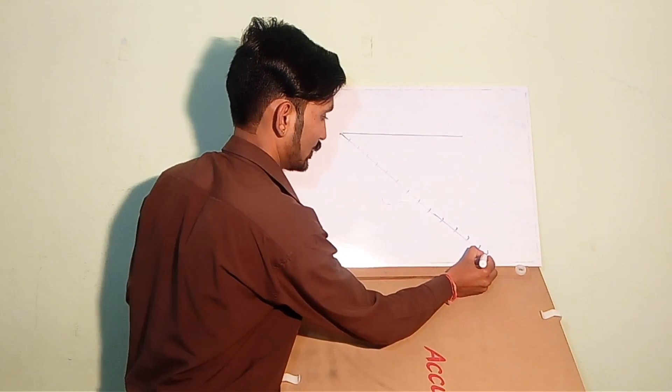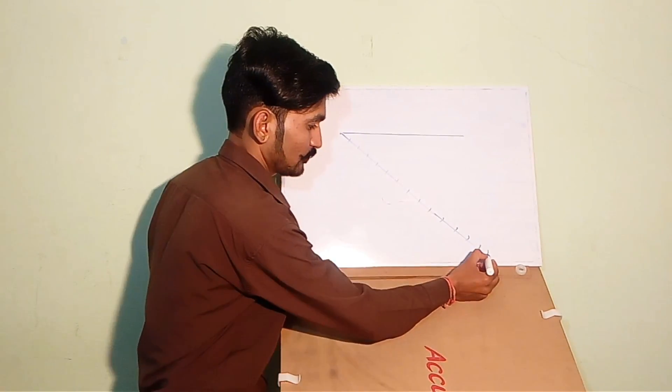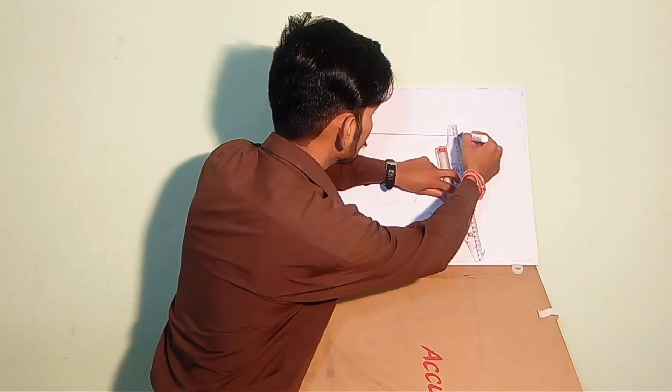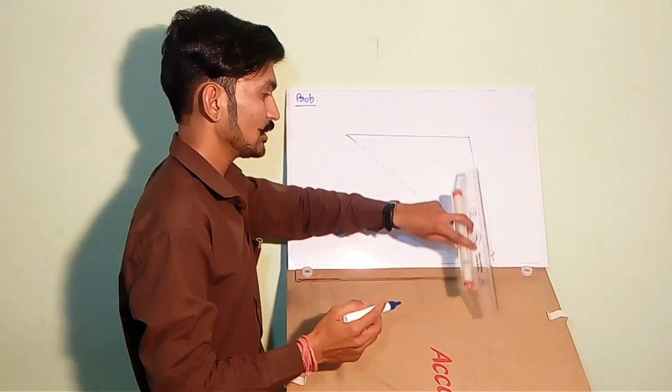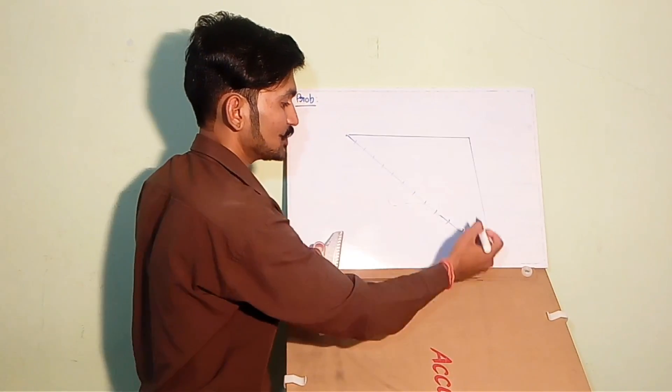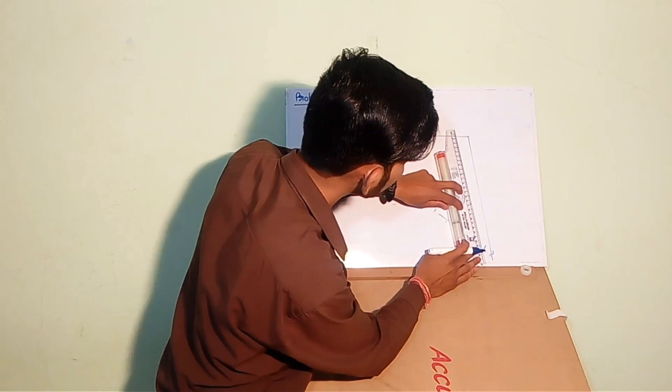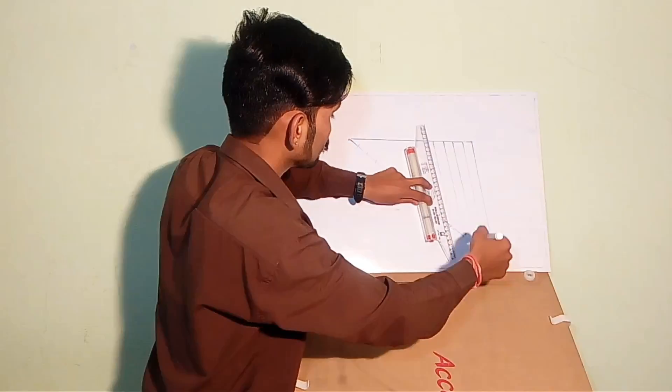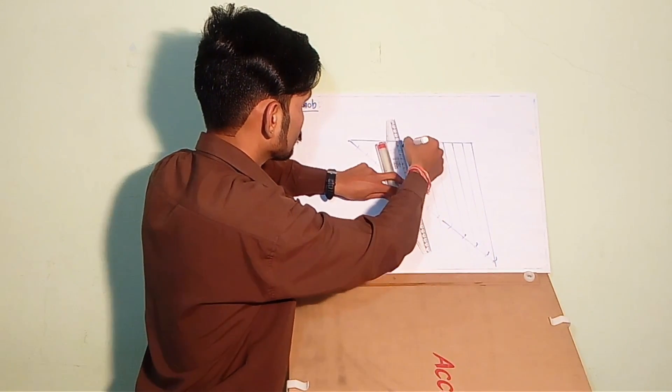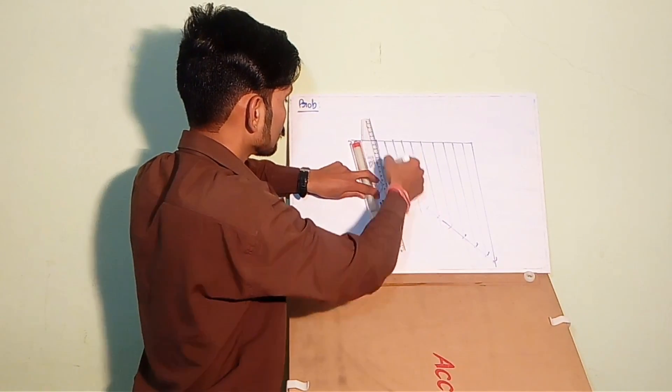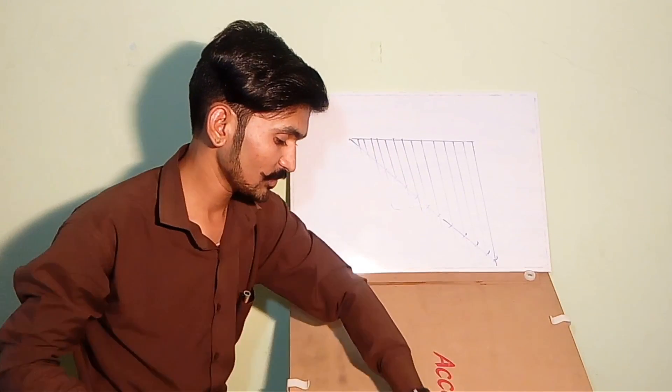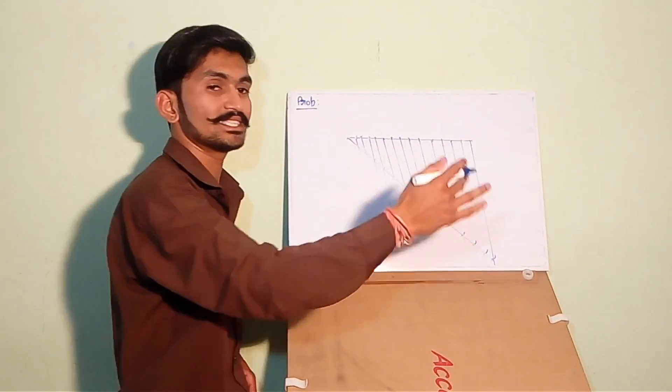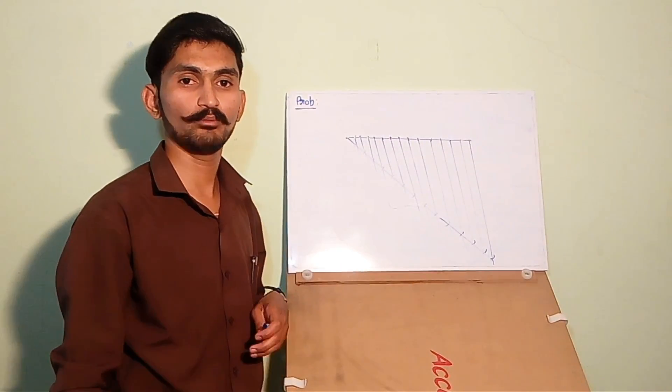This is the line of 14. Now draw a line from this point to the end point of the baseline. Now draw lines parallel to this line from each intersection point. This is how we have divided that line into 14 equal parts.